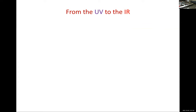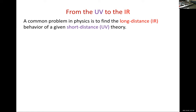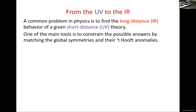So what do we do in physics? The common problem is to go from the UV to the IR. Throughout the talk I'll be using a color code — purple for UV and red for IR. We formulate the problem at short distances: this could be string theory, a field theory in the UV, a conformal field theory, or a lattice model, and our goal is to figure out what happens at long distances. One of the main tools we use is symmetries — we would like to constrain the answer using the symmetries of the problem.